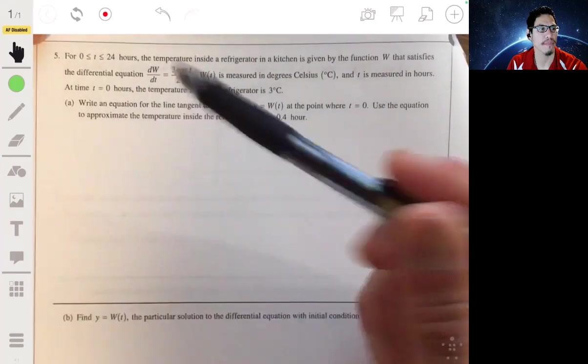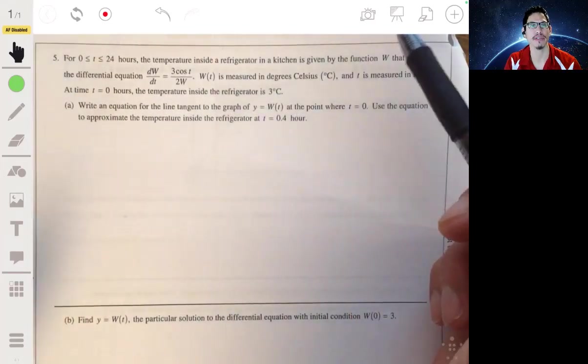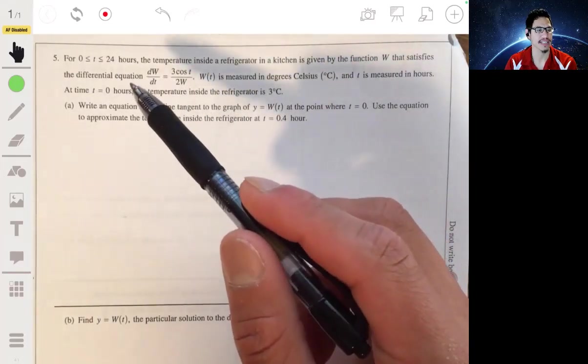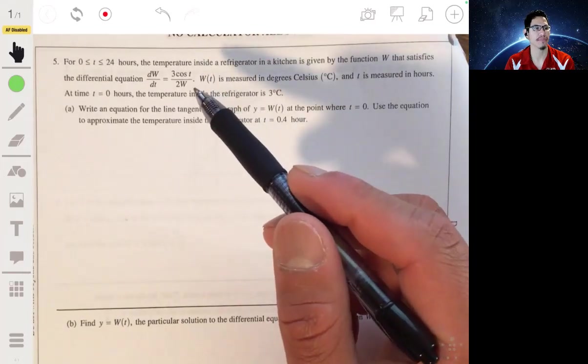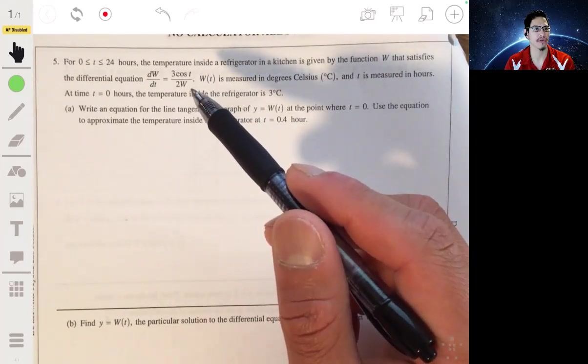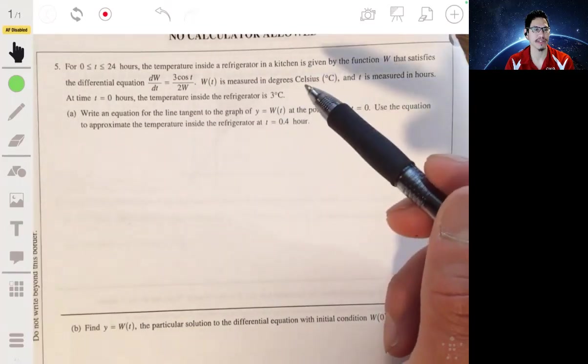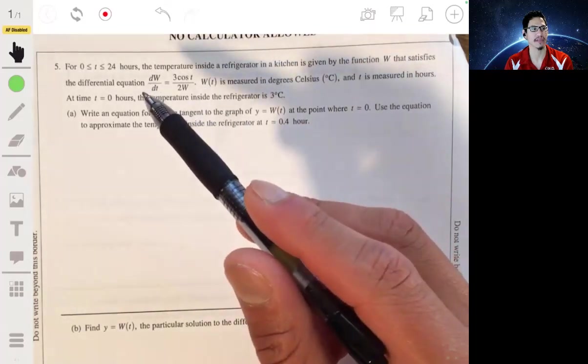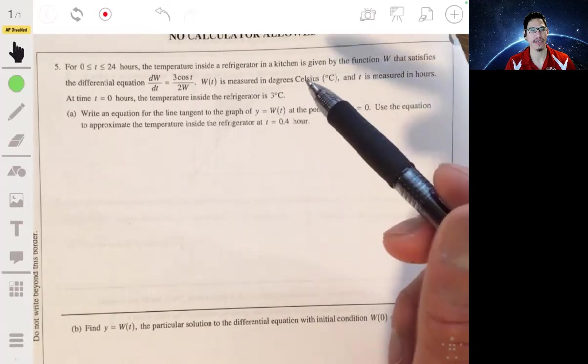All right, problem five. We have for T between 0 and 24 hours, the temperature inside a refrigerator in the kitchen is given by the function W that satisfies the differential equation dW/dt is equal to 3 cosine of T over 2W, and W of T is measured in degrees Celsius, and T is measured in hours. At time T equals 0 hours, the temperature inside the refrigerator is 3 degrees Celsius.